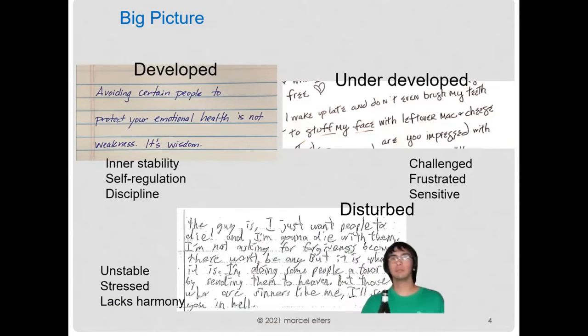Or we can have completely disturbed writing. The handwriting is highly uneven, irregular, without control, and that suggests an unstable, stressed mindset. Oftentimes these individuals feel rejected by society as a whole and may be self-isolating.